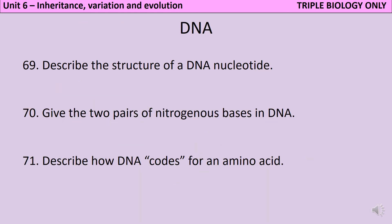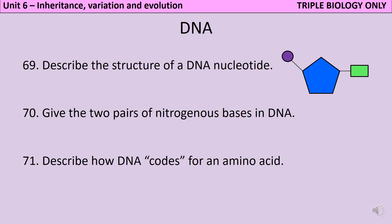A DNA nucleotide has three key parts. At the centre of the nucleotide is a pentose sugar - a sugar that has five carbons in it. This is attached to a phosphate group, which makes up the backbone of the DNA. Attached to this is also a nitrogenous base. It's these bases that provide the code for the DNA.